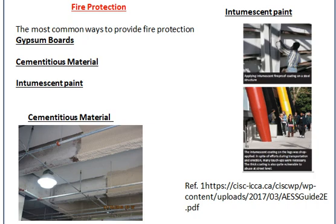If you have a building which doesn't have a ceiling or partition walls — for example, an industrial building like you can see in this picture, which was one of our projects — then the fire protection material used would be cementitious material.